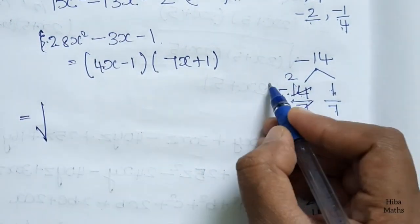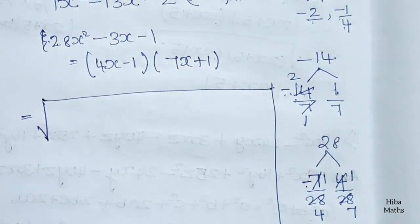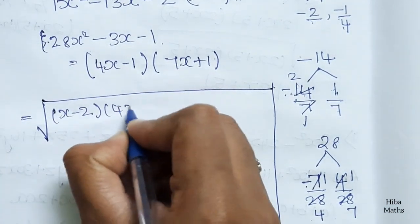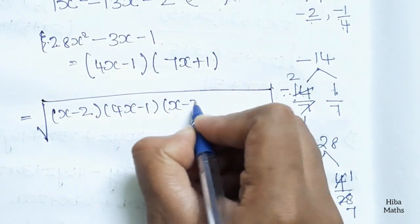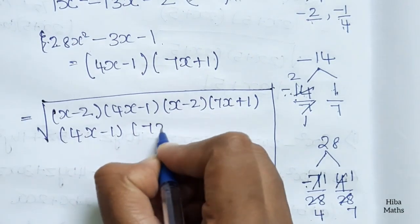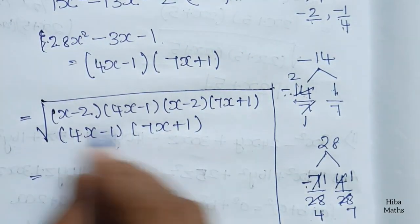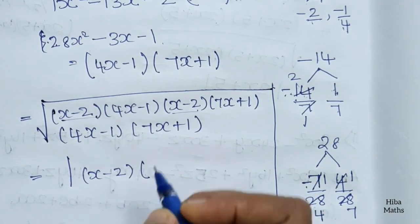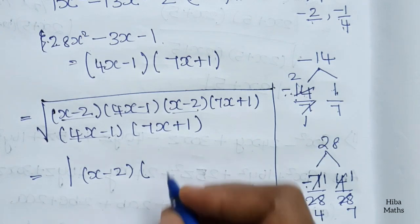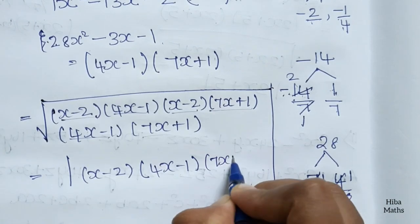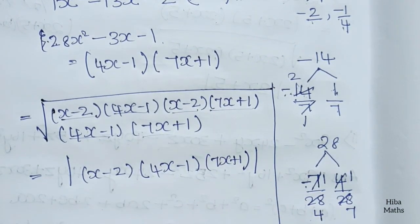Now put all factors under the square root. First factor: (x minus 2)(4x minus 1). Next factor: (x minus 2)(7x plus 1). Then (4x minus 1)(7x plus 1). The square root simplifies: (x minus 2) appears twice, (4x minus 1) appears twice, (7x plus 1) appears twice. The final answer is modulus of (x minus 2)(4x minus 1)(7x plus 1).